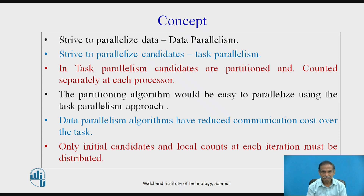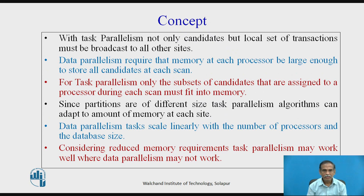At each processor, the partitioning algorithm would be easy to parallelize using the task parallelism approach. Data parallelism algorithms have reduced communication cost. Only initial candidates and local counts at each iteration must be distributed. With task parallelism, not only candidates but local sets of transactions must be broadcast to all other sites. Data parallelism requires the memory at each processor to be large enough to store all candidates at each scan.